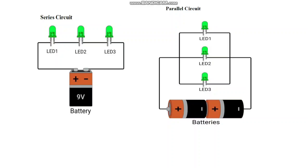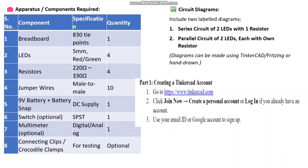This is the basic diagram for series and parallel circuits. Here three LEDs are shown, but in our experiment we are using only two LEDs. These are all the component list you can see. The series circuit uses two LEDs and one resistor; the parallel circuit uses two LEDs each with one resistor.